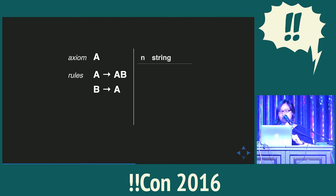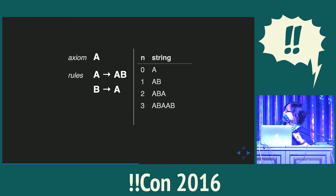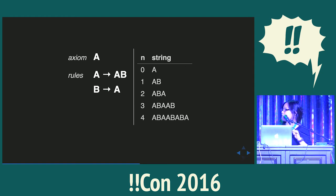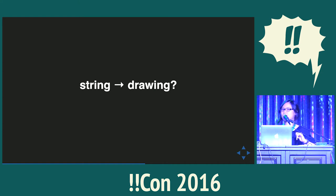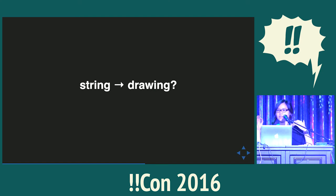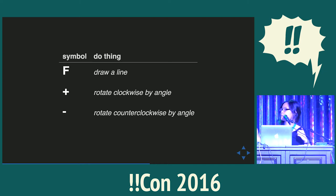You can iterate through it multiple times. You start off with A, replace A with AB, replace A with AB and B with A, and so on and so forth. What it gives us is a resulting string after four rounds of replacements. This system is really great for describing recursive patterns. The next question is: what do strings have to do with drawing? We use a string to describe steps in drawing. Symbols like F, A, and B serve as instructions to draw a line; plus rotates clockwise by a predefined angle; and minus rotates counterclockwise by that same angle.